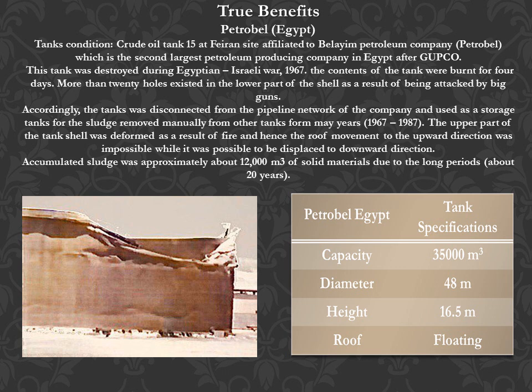True benefits — Petrobel case study. Crude oil tanks at Ferran site, affiliated to Bellium Petroleum Company, the second largest petroleum producing company in Egypt after GUPCO. This tank was destroyed during the Egyptian-Israeli war in 1967; the contents burned for four days. More than 20 holes existed in the lower part of the shell. The tank was disconnected from the pipeline network and used as a storage tank for sludge removed manually from other tanks from 1967 to 1987. The upper part of the shell was deformed by fire, making upward roof movement impossible. Accumulated sludge was approximately 12,000 m³ of solid materials due to the long period of about 20 years.